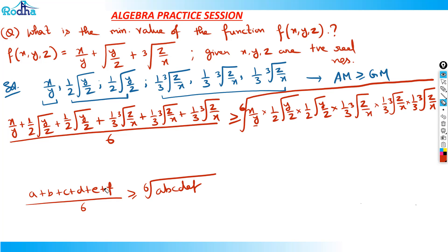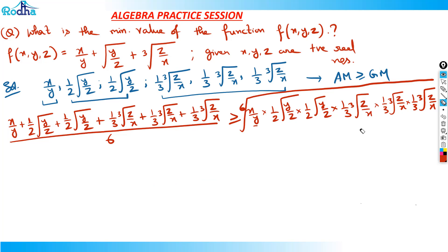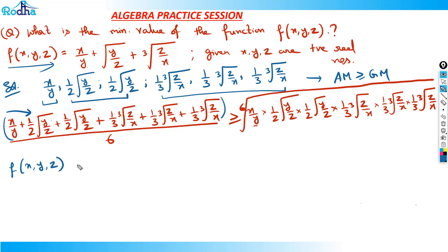Now let's simplify. If you look at this numerator — x/y + (1/2)√(y/z) + (1/2)√(y/z) + (1/3)∛(z/x) + (1/3)∛(z/x) + (1/3)∛(z/x) — adding these back gives x/y + √(y/z) + ∛(z/x), which is exactly f(x,y,z). So the numerator is just f(x,y,z). We can write: f(x,y,z)/6 ≥ sixth root of the product, or f(x,y,z) ≥ 6 · (sixth root of the product).